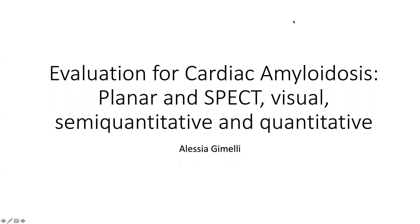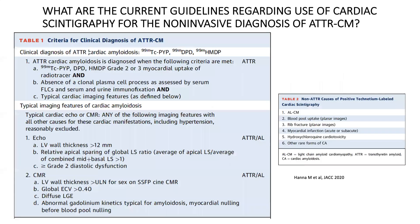The aim of this presentation is to analyze how we can evaluate cardiac amyloid by planar and SPECT scan in a visual, semi-quantitative, and quantitative way. The current guidelines regarding the use of cardiac scintigraphy indicate the presence of a Perugini grade 2 or 3 at bone scan as one of the main criteria for the diagnosis of cardiac amyloidosis.